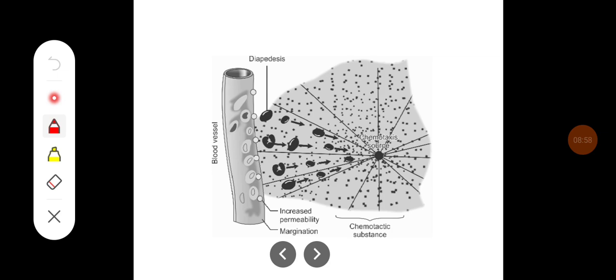This diagram showing different phases of phagocytosis. Initially there will be marginalization of the neutrophilic cells. Then there will be increase in capillary permeability because of which the neutrophils mainly squeeze through the capillary membrane, the process which is called diapedesis.